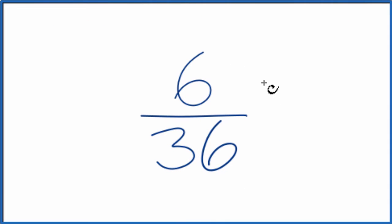What we want to do is find another fraction that's equal to 6 over 36, an equivalent fraction, but we want it reduced to its lowest terms. So we need to find a common factor, something that goes into 6 and 36.